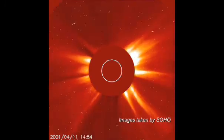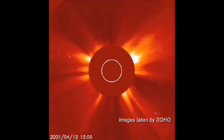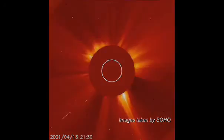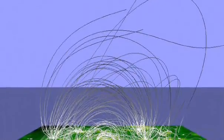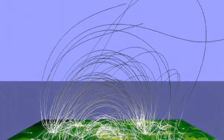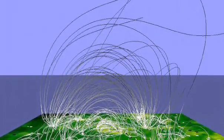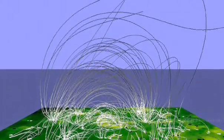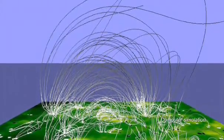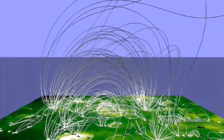Using data from SOHO, scientists have analyzed the appearances and disappearances of tens of thousands of small magnetic concentrations on the solar surface. This magnetic carpet is highly dynamic and rapidly changing.